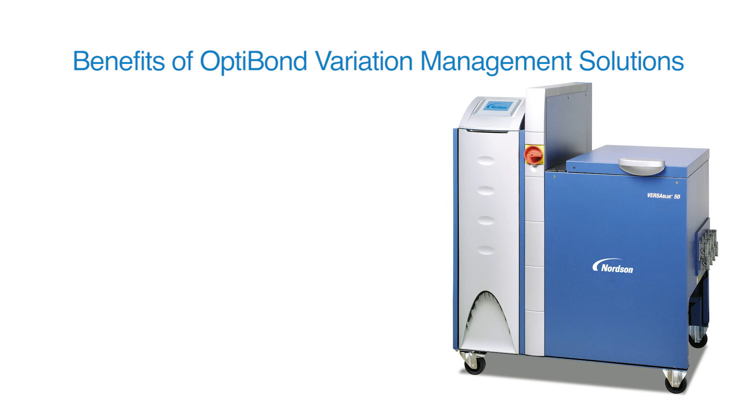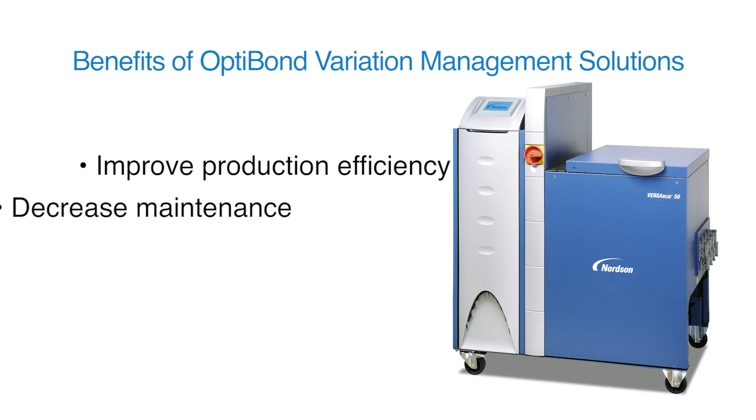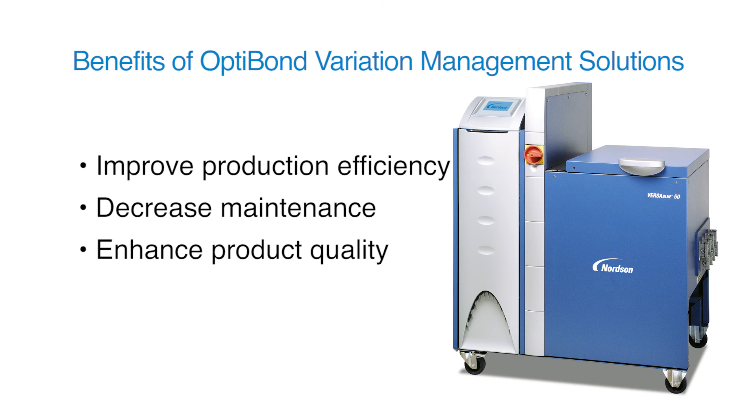Implementing a Nordson OptiBond Variation Management Solution offers a number of benefits to manufacturers: improved efficiency, decreased maintenance, enhanced quality, optimized material use. These benefits contribute to production of higher quality products faster, more efficiently, and at a lower cost.